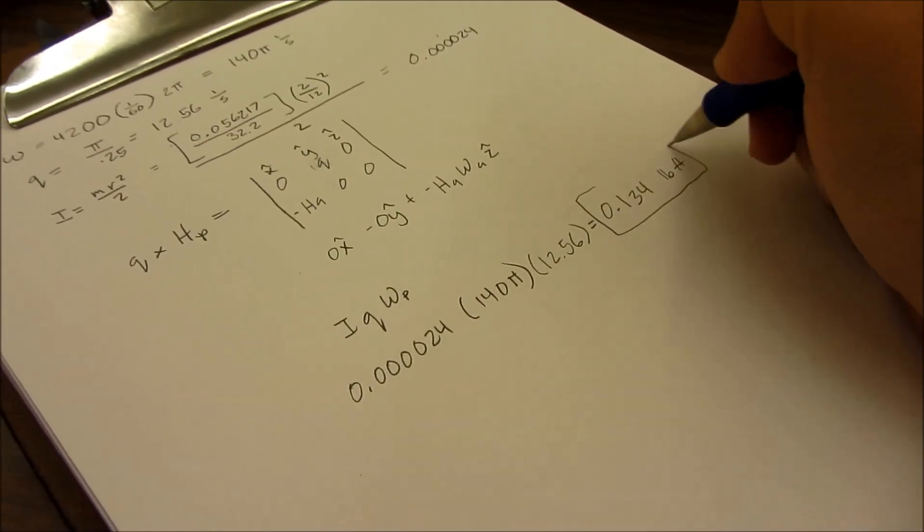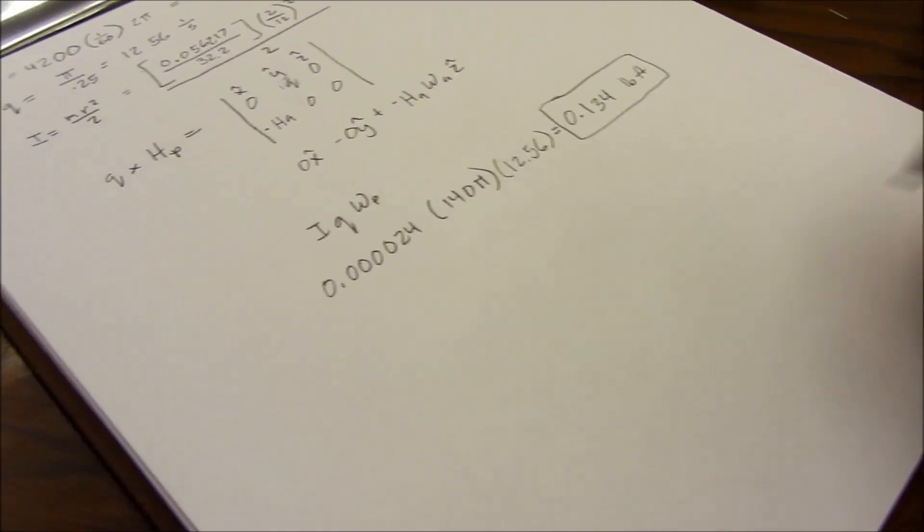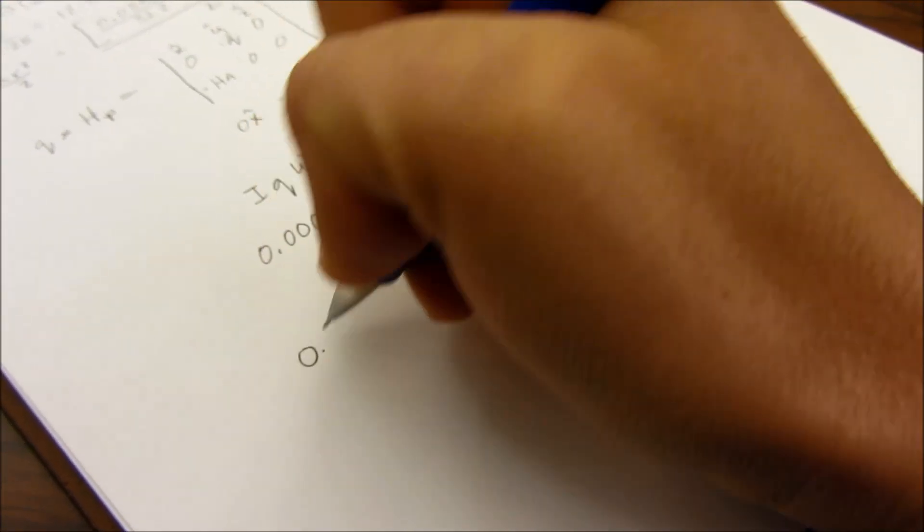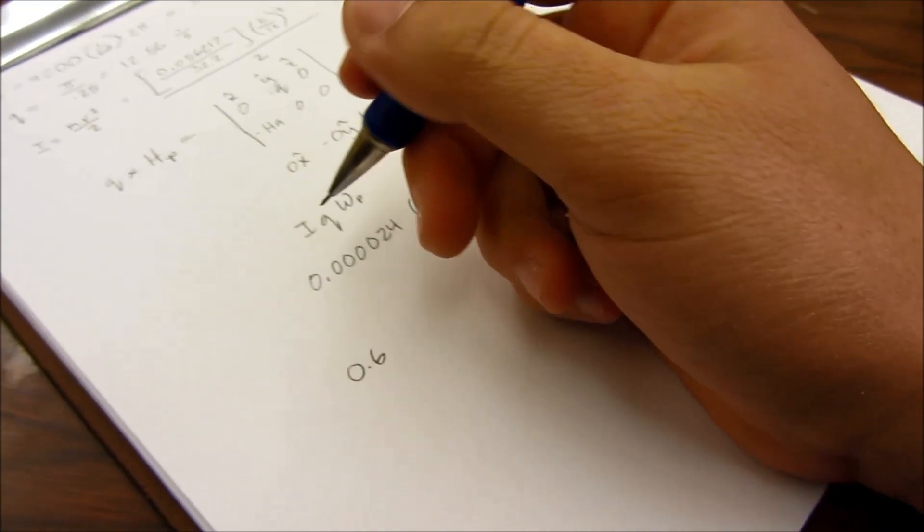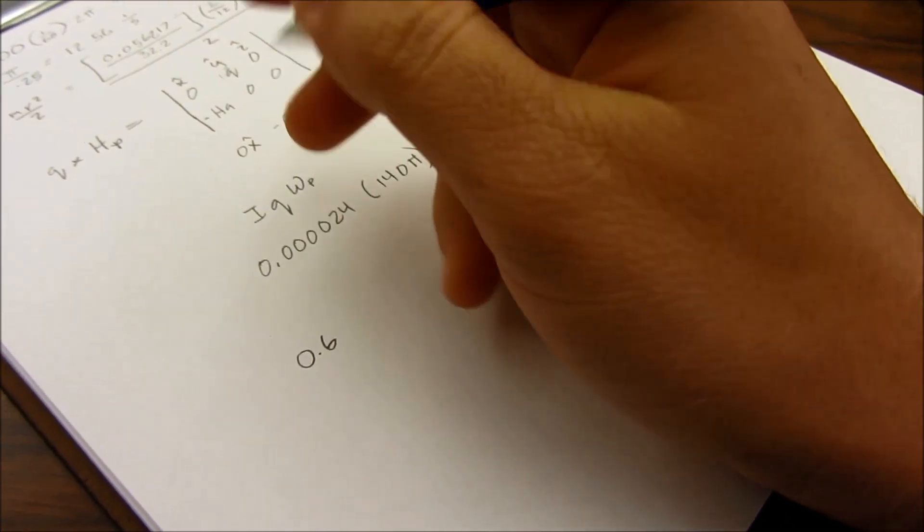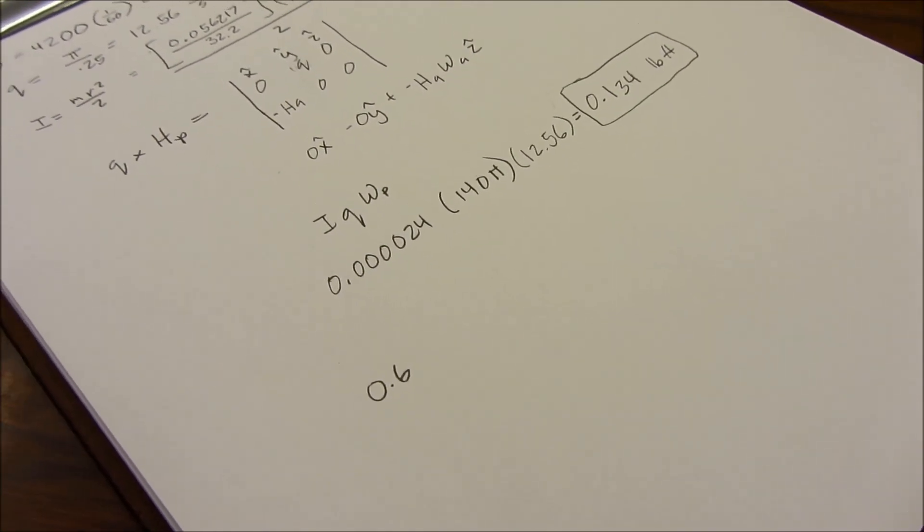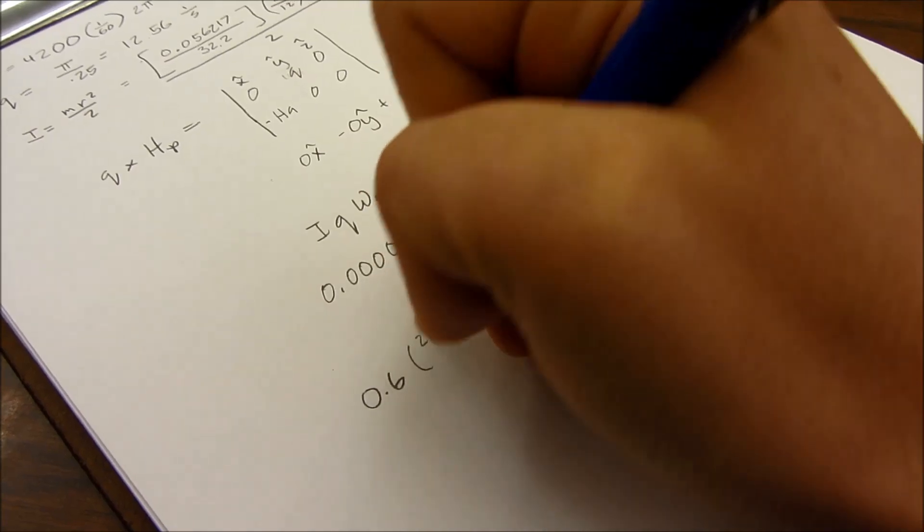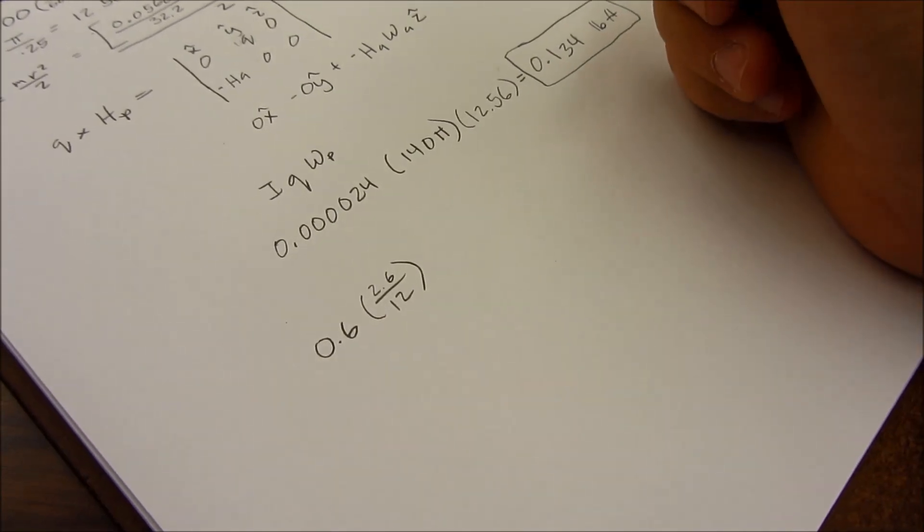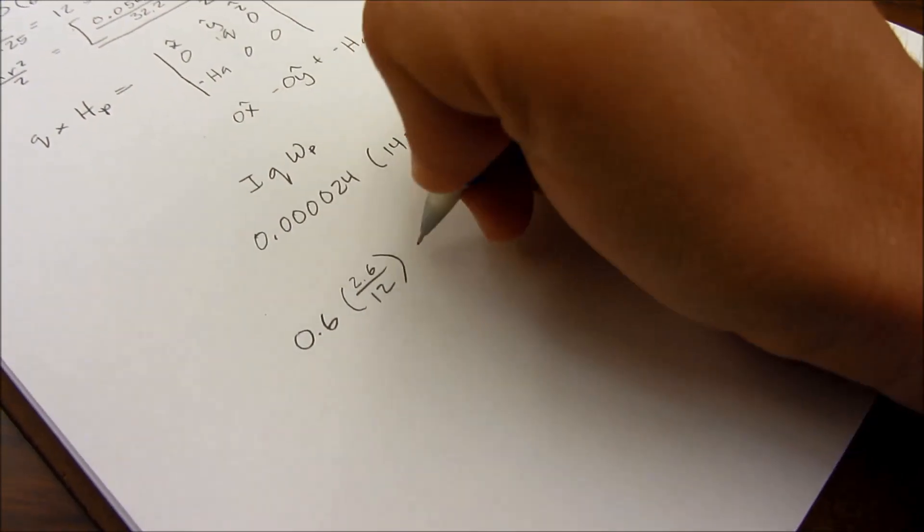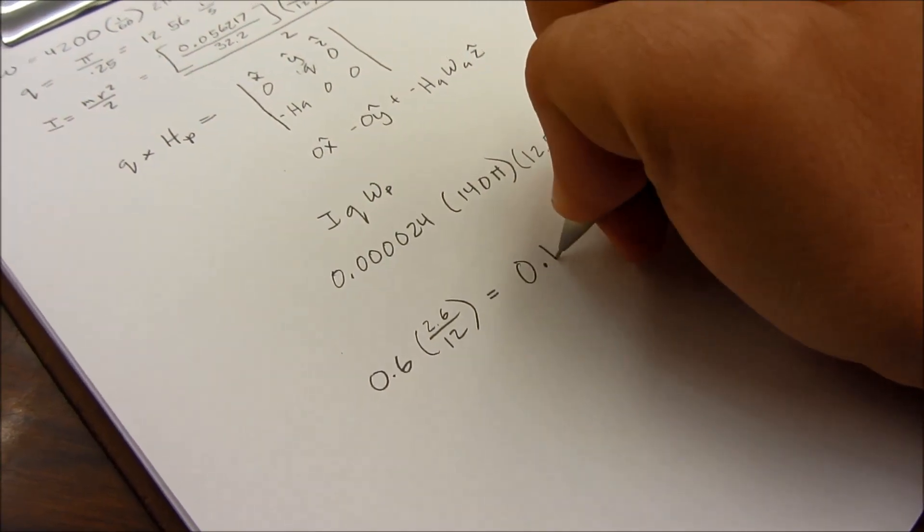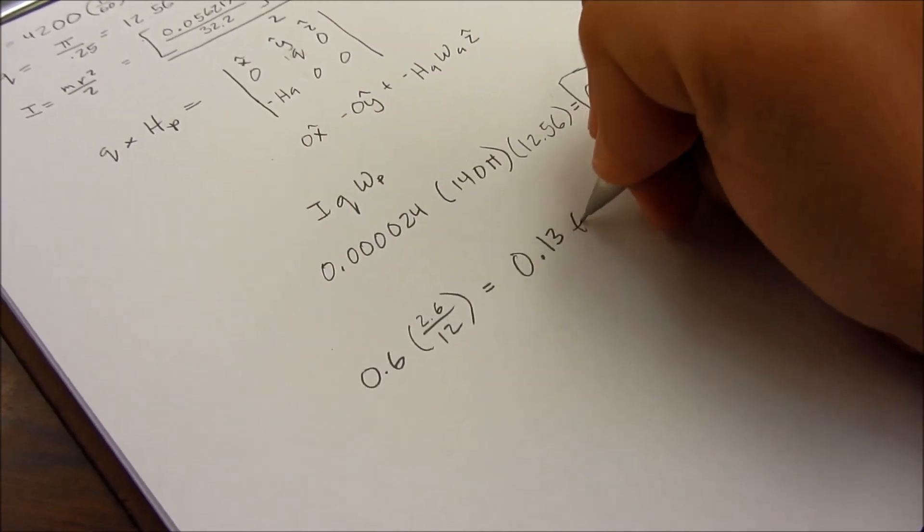Now, our actual data that we got, as you saw in the previous video, was a force of 0.6 pounds. Now, the distance between the vertical axis and the point where this force was acting was 2.6 inches. So we do 2.6 divided by 12 to put that in feet. And that equals to 0.13 foot-pounds.